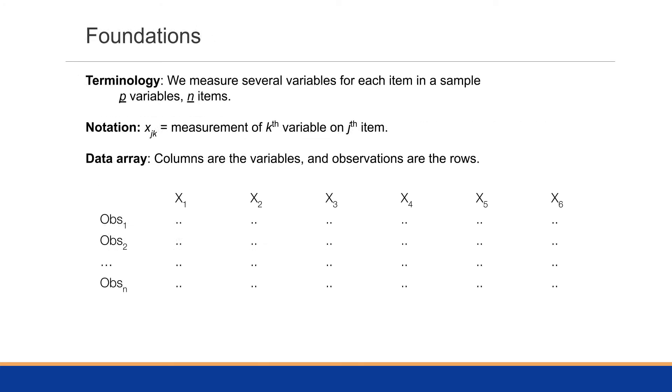Some of the foundations for this class: we have technology where we're going to be measuring several variables for each item in a sample, so p variables for n items or n observations. We'll have a notation of x sub jk, which is a measurement of the k-th variable on the j-th item. We'll do rows and columns in terms of these notations. And a data array is where columns are the variables and observations are the rows.